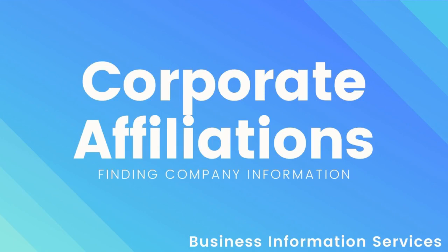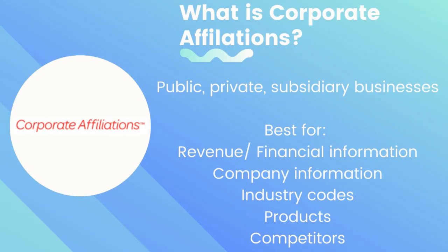Welcome to our video on how to find company information using Corporate Affiliations. Corporate Affiliations provides information on nearly 200,000 prominent corporations, including public and private businesses. If you follow the company flowchart, you will see that if you're looking for information on a subsidiary company, Corporate Affiliations is a good place to start. This database has revenue and financial information, company information, industry codes, and product descriptions.